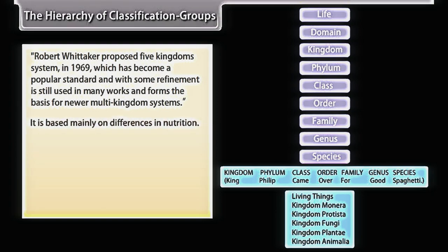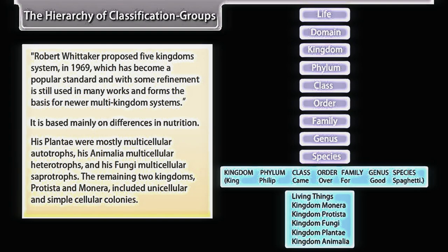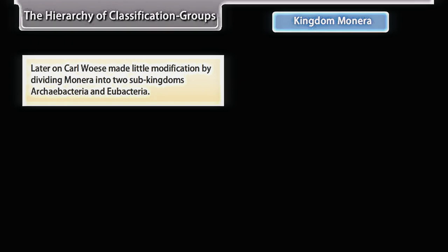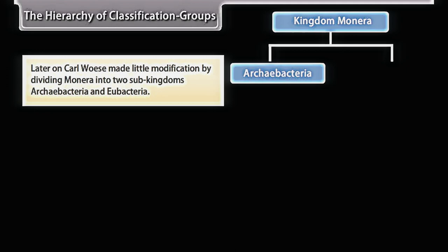Whittaker's system is based mainly on differences in nutrition. His Plantae were mostly multicellular autotrophs, his Animalia multicellular heterotrophs, and his Fungi multicellular saprotrophs. The remaining two kingdoms, Protista and Monera, included unicellular and simple cellular colonies. Later, Carl Woese made a modification by dividing Monera into two sub-kingdoms: Archaebacteria and Eubacteria.